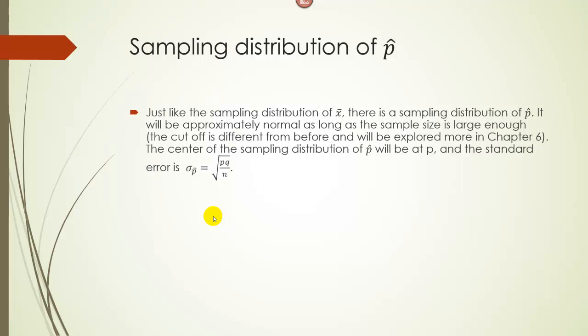Just like there's a sampling distribution of X bar, there's also a sampling distribution of P hat done in a very similar manner. The sampling distribution of P hat is going to be normal as long as you have a large enough sample, and it's centered on P, the actual population proportion. The standard error, sigma P hat, is the square root of PQ over N. Don't worry too much about this; we're going to simplify this in a moment.